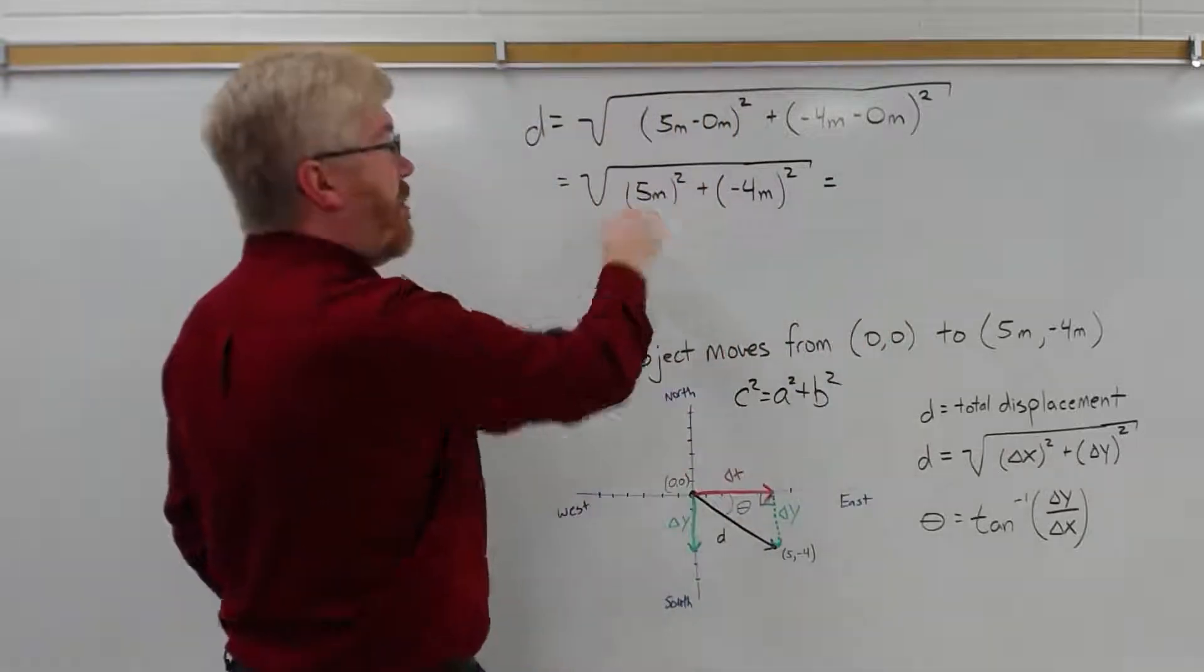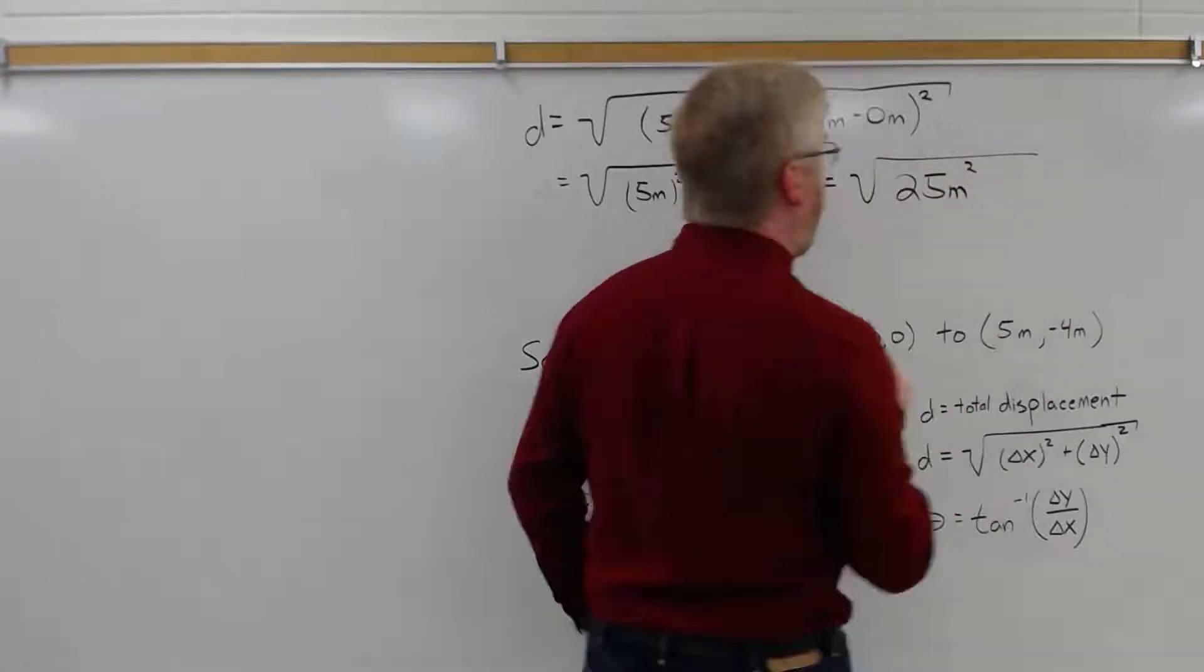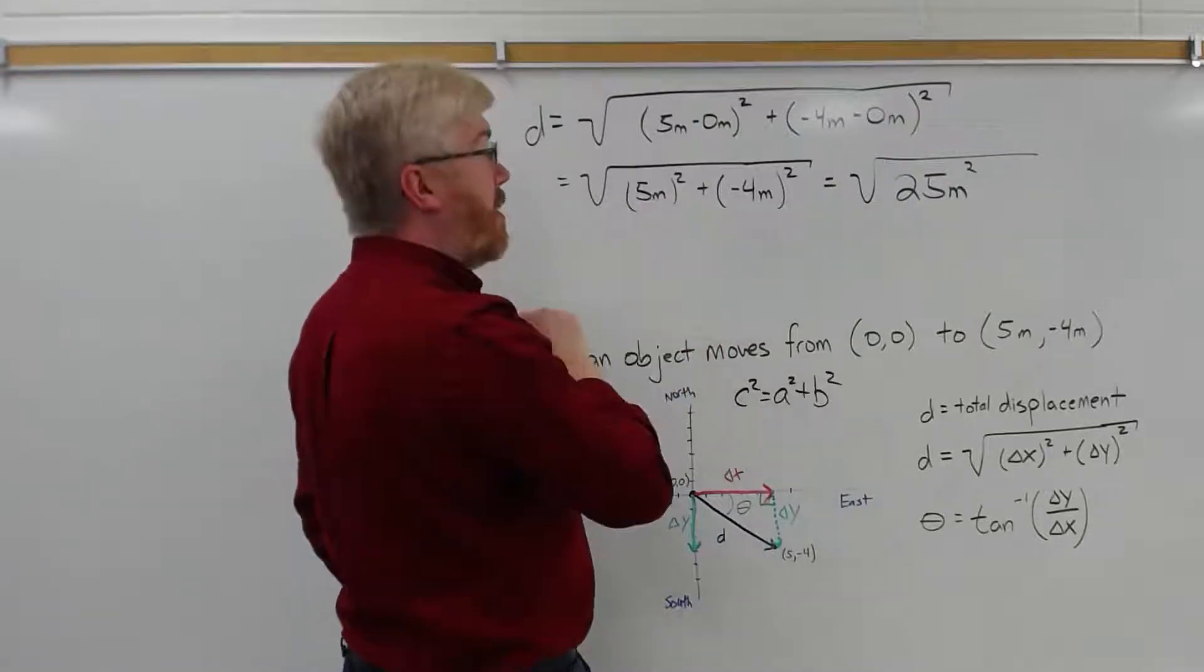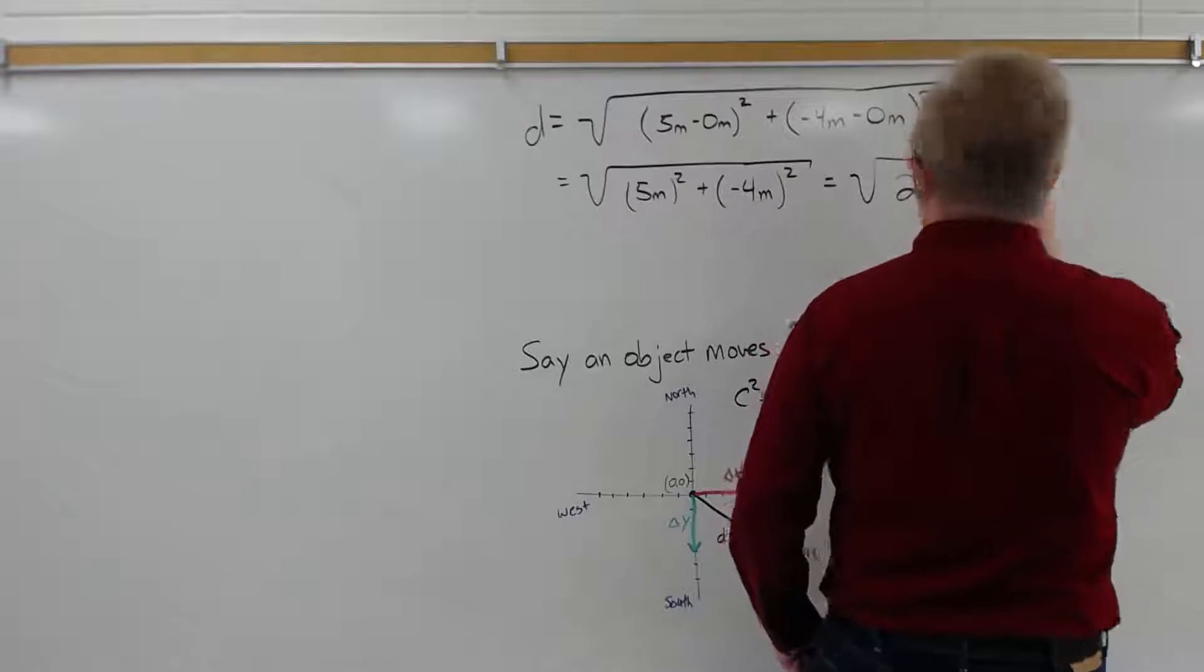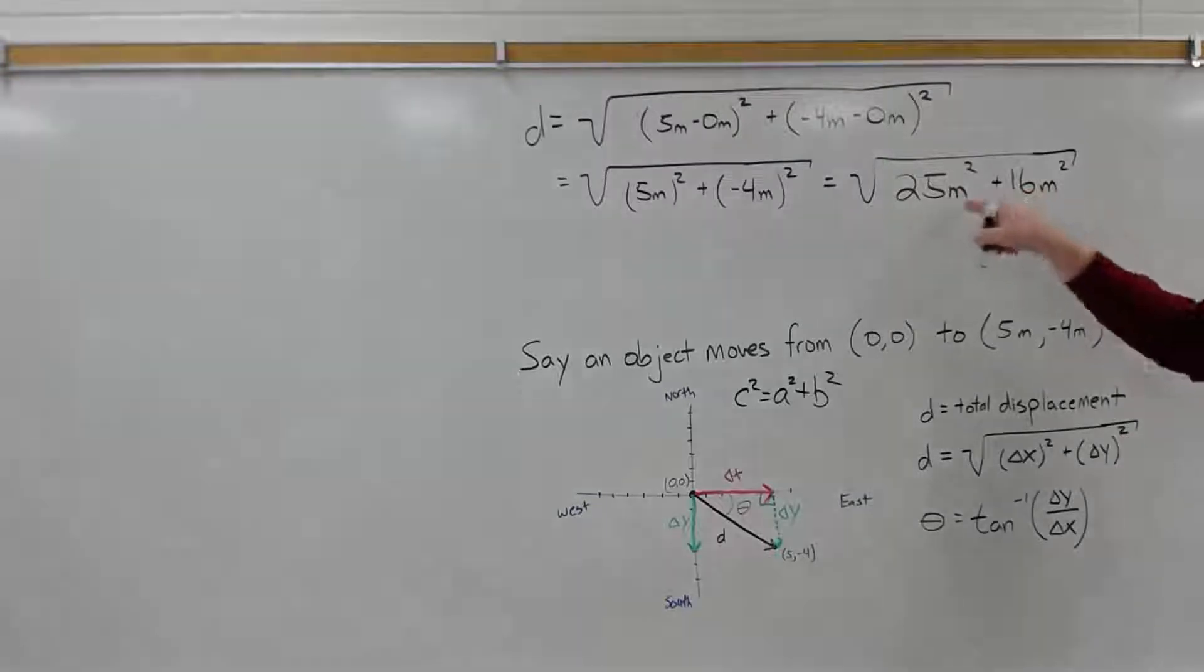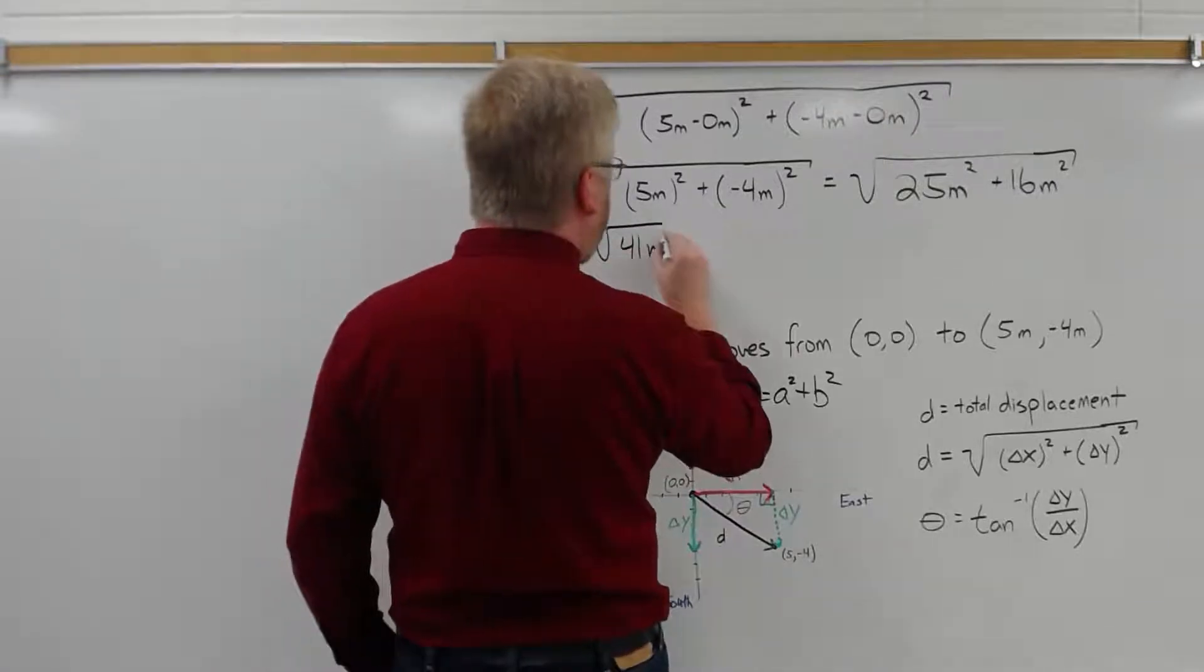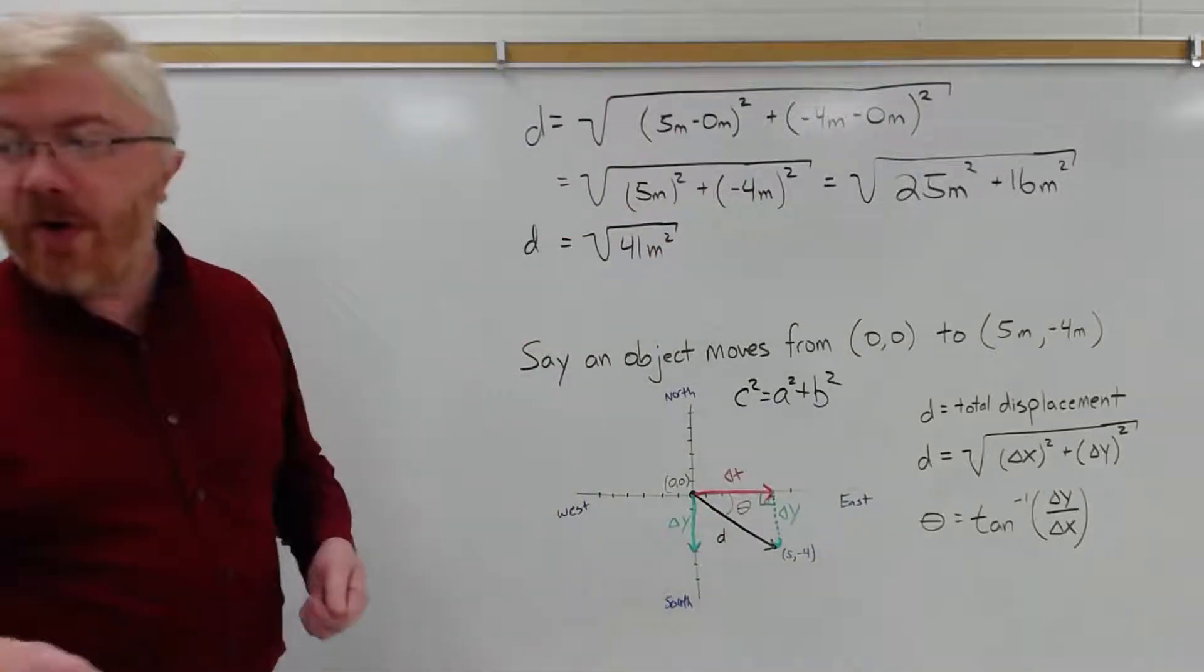That's equal to, 5 squared is 25. This is the square root of 25 meters squared. The meters are squared too. The number has already been squared, but the unit has to be squared as well. Minus 4 squared, minus 4 times minus 4 is 16. So add to this 16. The meters are squared again. These are the same units, so I can add them. They're both meters squared. So 25 plus 16, that's 41.